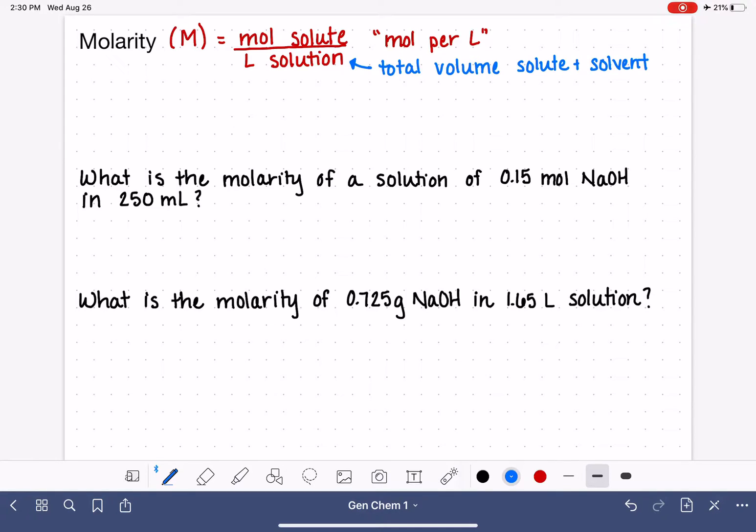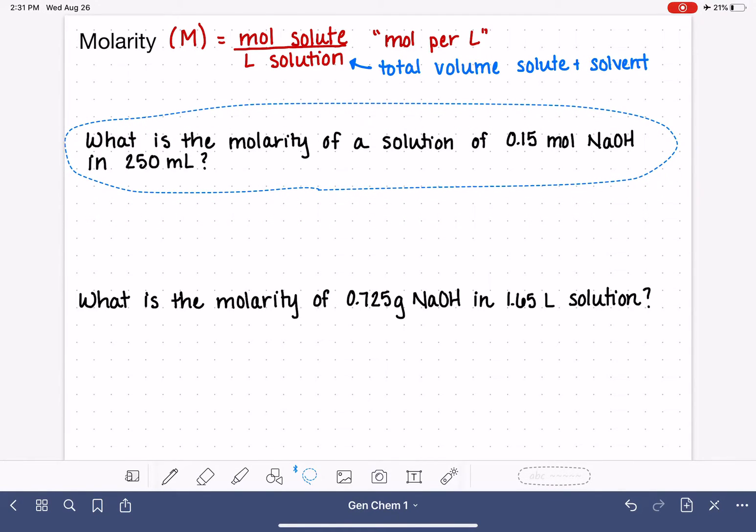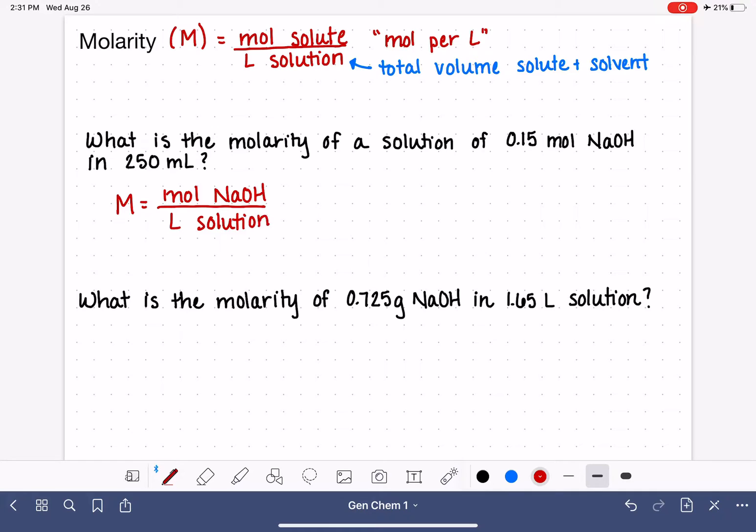So let's work on a couple of simple molarity examples. This first problem is asking us to calculate what is the molarity of a solution if it is made with 0.15 moles of NaOH in 250 milliliters. The molarity is going to be the moles of NaOH divided by the volume of the solution in units of liters. The problem tells us that we have 0.15 moles of NaOH.